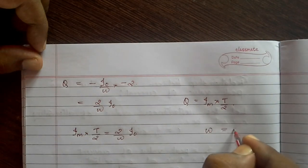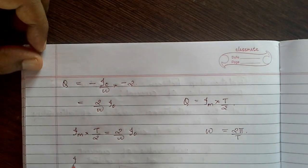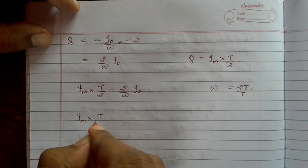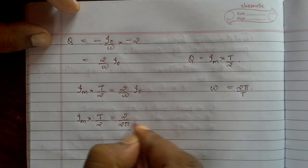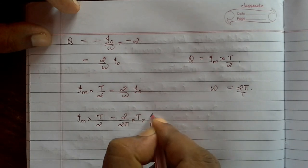We know that omega equals 2 pi by T. We can put the value in here. So Im into T by 2 equals 2 divided by omega equals 2 pi by T, into i0.